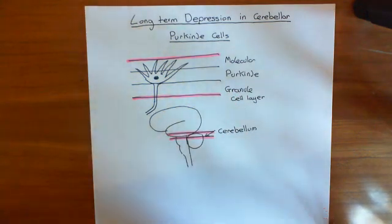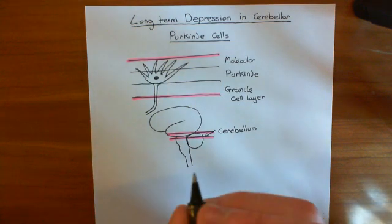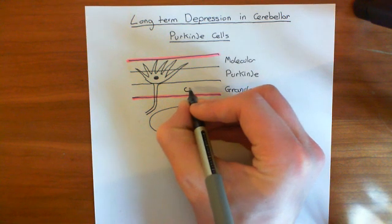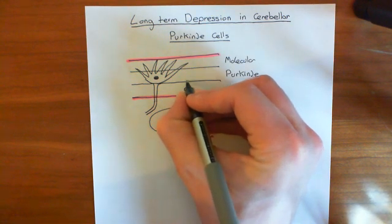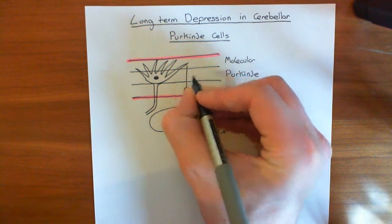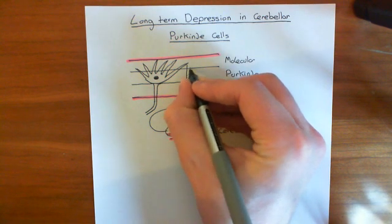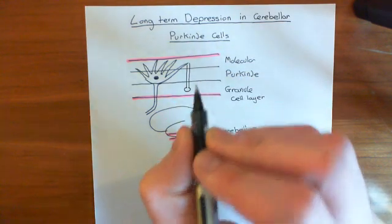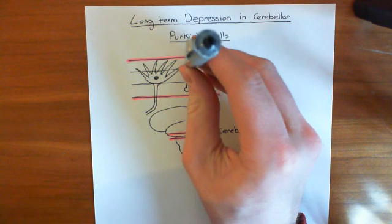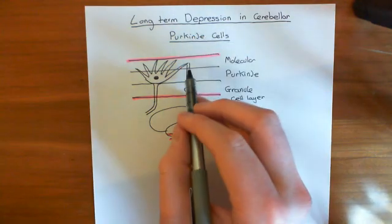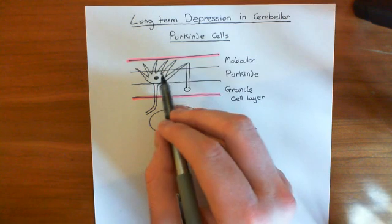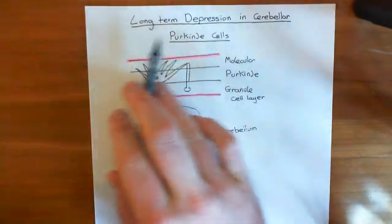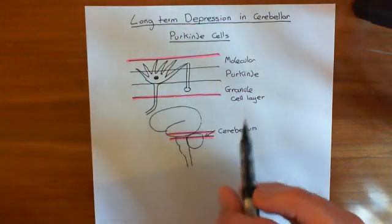This Purkinje cell sends its axon down into the depths of the cerebellum, and that axon will then leave the cerebellum. Now, the next important cell is the granule cells. Granule cells are much, much more tiny. Here's a little granule cell, and it sends up its axon up into the molecular layer. Then what happens is this axon moves in a very specific direction - it moves straight out of the page.